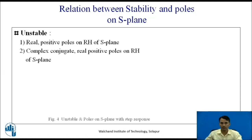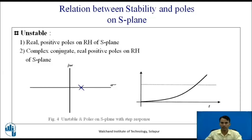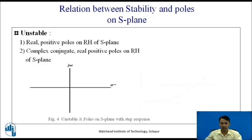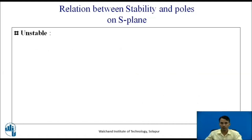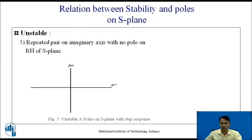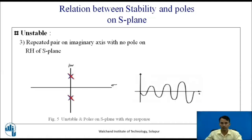For an unstable system, the conditions are: poles should be real positive on the right hand side of the S-plane, and the step response will reach infinity. The second condition is poles should be complex conjugate with real positive part on the right hand side, giving an increasing sinusoidal step response. One more condition for an unstable system is if there are repeated pairs of poles on the imaginary axis with no pole on the right hand side of the S-plane — the step response will also be an increasing sinusoidal.